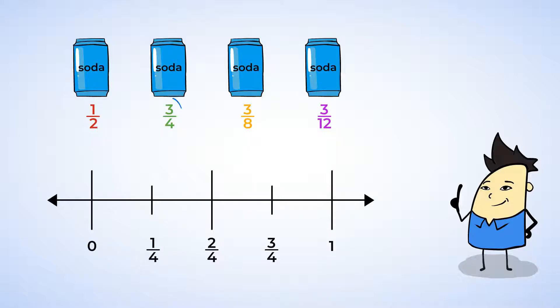First, looking at the can that's three-fourths full. Well, three-fourths goes here on our number line. Half of four is two, so one-half is the same as two-fourths. And that goes here on the number line. Three-fourths is closer to one, and therefore is a larger fraction. One-half is less than three-fourths.